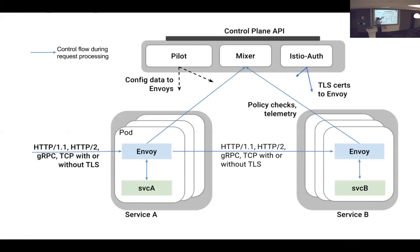The way Istio works is there's a piece in the control plane called Mixer, which you consult for runtime rule evaluation. If you want to do rate limiting across a bunch of pods, they call back to Mixer asking if there's any rate left for this service, and Mixer responds accordingly. Pilot deals with a lot of static configuration and more of the configuration side of things.